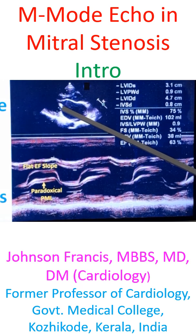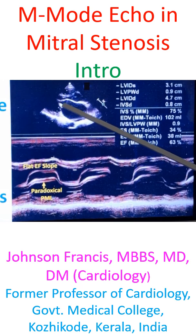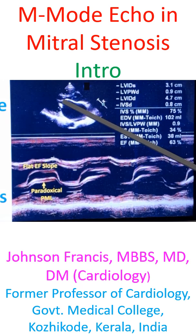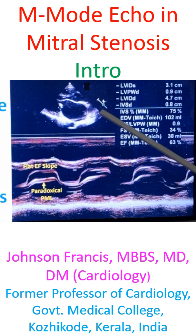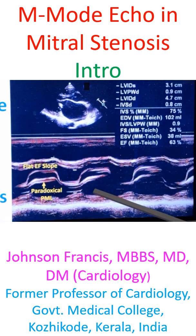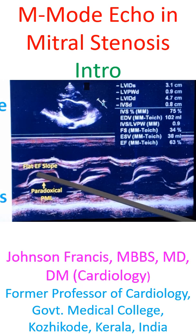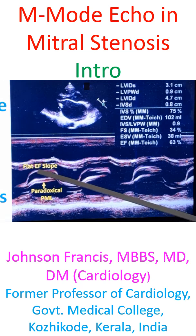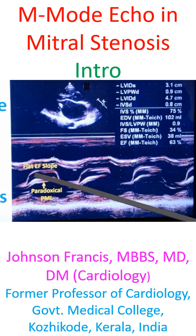There is calcification of the posterior mitral leaflet, which is moving paradoxically, and the anterior leaflet of the mitral valve is doming. These same features you are seeing in echocardiogram, M-mode echocardiogram also. The doming — the corresponding feature is this anterior motion of the mitral leaflet.